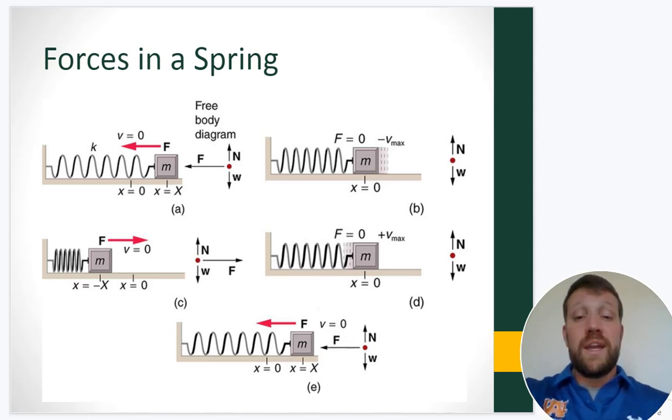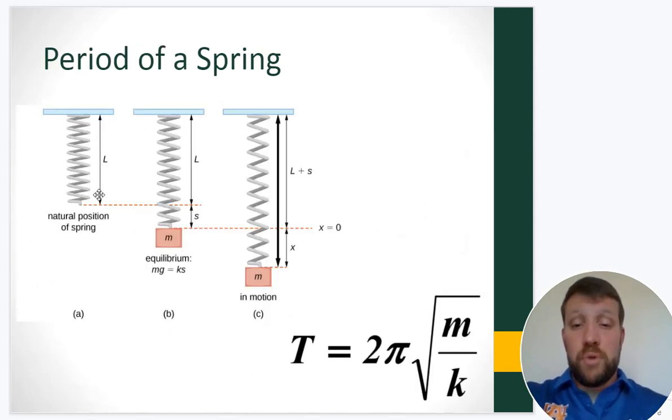Now whether we compress it horizontally like this or we have a spring at a natural length that we hang a mass from, we could pull this mass down, release it, and it would oscillate up and down. So the same type thing would happen right here. The period of oscillation for this spring is seen down here at the bottom. Now in this case, the mass is relevant and it's just going to be the mass and the spring constant that we need to determine the period of oscillation for a spring as it has a mass on it.